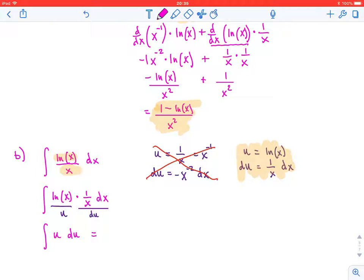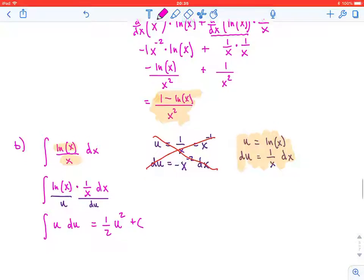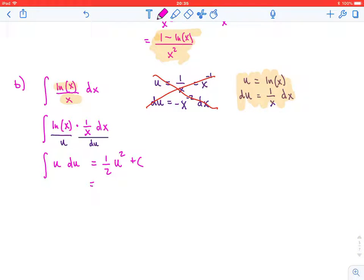And we know, just using our power rule, what that antiderivative is. We can get that it's (1/2)u^2 + c. And now that we have that, let's make sure we remember to substitute back in for u. So this is (1/2)(ln(x))^2 + c. And that is our antiderivative and our answer to part b.